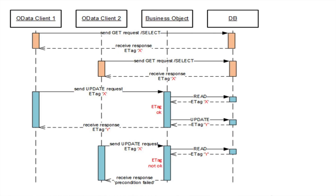One is ETag. Consider here OData client 1 and client 2 trying to access the same record from the database table. First, OData client 1 sends a GET request, and from the DB, gets back the response with ETag X. A few milliseconds later, OData client 2 sends a GET request and receives the same record response with ETag X. So here the ETag has the value of X.